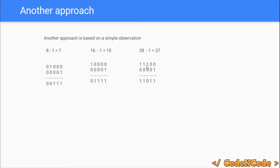To explain what happens: the rightmost set bit is the key. When you subtract 1 from n, ignore the bits to the left of the rightmost set bit — those remain the same. The rightmost set bit becomes 0 and all bits to the right of it become 1. So n AND (n-1) effectively removes the rightmost set bit from n, zeroing it out while leaving all bits to the left unchanged. We are going to use this observation to build our second algorithm.